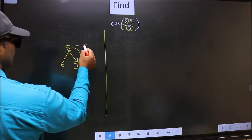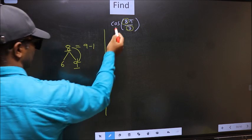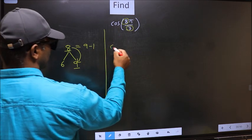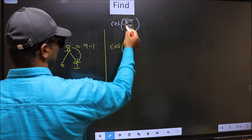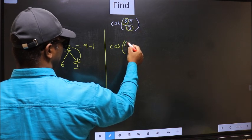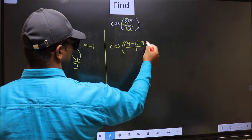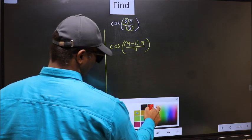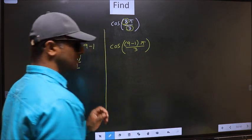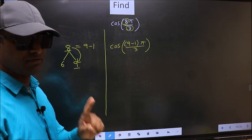So now 8 should be written as 9-1. So this will become cos, in place of 8, now you write 9-1, π/3. This is your step 1.